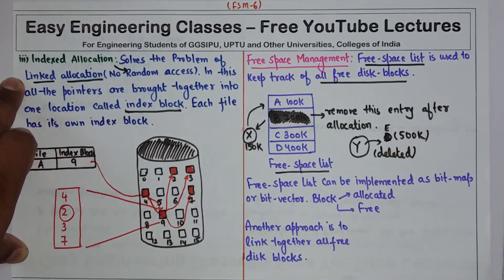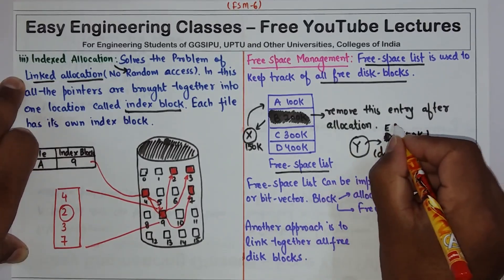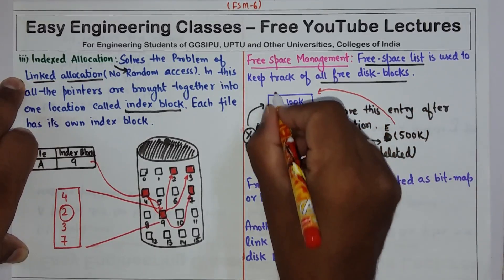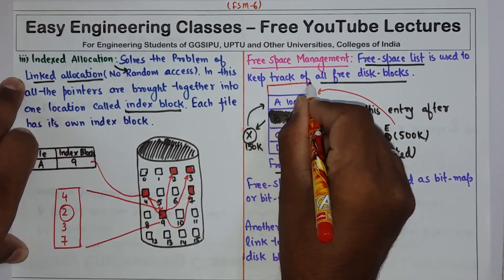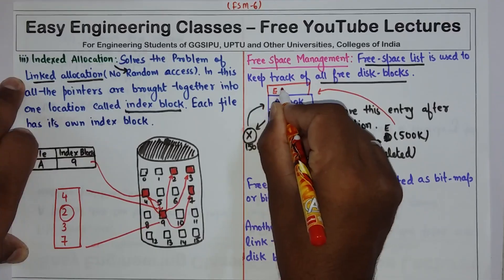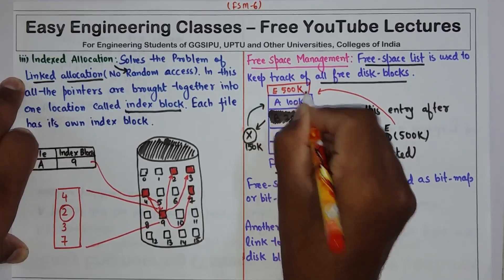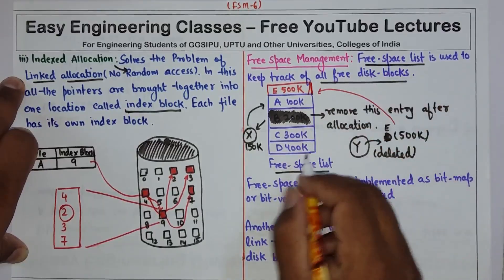So what the system will do, this is E actually, because we already have D here. So once the file is deleted, we have to make an entry of this E in the free space list.